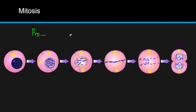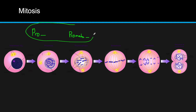Next we have prometaphase, which is not as commonly seen and is usually grouped with prophase. During prometaphase, the nuclear envelope is pretty much fully dissolved, and the spindles start to attach to the chromosomes, though they won't really take action yet. Usually prophase and prometaphase are grouped together — just think prophase and also prometaphase.